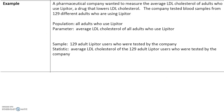Here's another example. A pharmaceutical company wanted to measure the average LDL cholesterol of adults who use Lipitor, a drug that lowers LDL cholesterol — LDL is bad cholesterol. The company tested blood samples from 129 different adults who were using Lipitor. The population is all adults who are using Lipitor — every single individual that fits the description of the study. The parameter is the average LDL cholesterol of all adults who use Lipitor. Since it's not practical to study every user, the sample is 129 adults, and the statistic is the average LDL cholesterol of those 129 Lipitor users. We take the statistic and make a conclusion about the population.